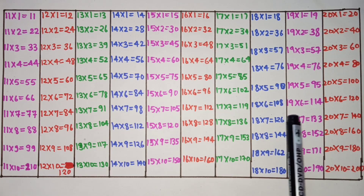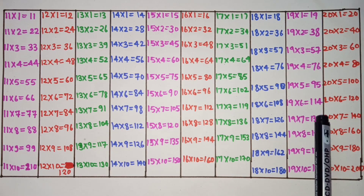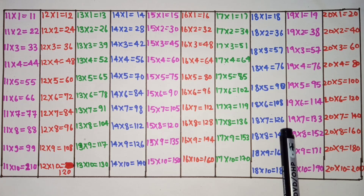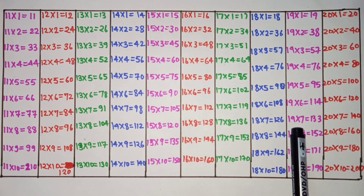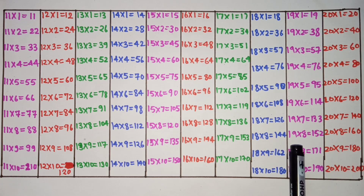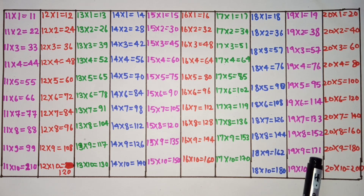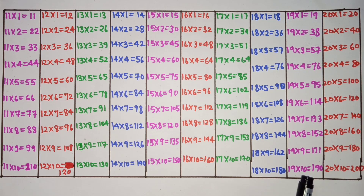19 6s are 114, 19 7s are 133, 19 8s are 152, 19 9s are 171, 19 10s are 190.